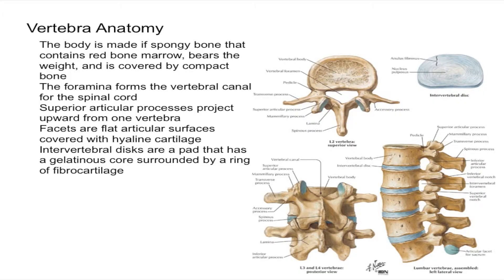In this video, I'm going to talk about the general structure of a vertebra, or vertebrae anatomy. First, we have the body of the vertebra, which is also called the centrum. The vertebral body is right over there, and it's essentially a mass of spongy bone that also contains red bone marrow.